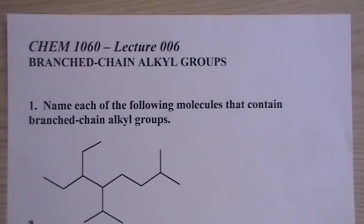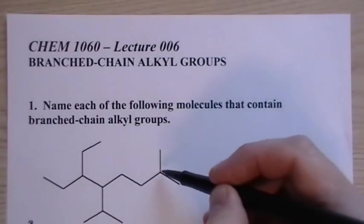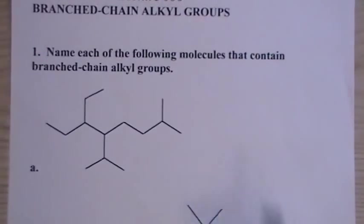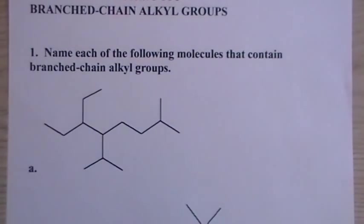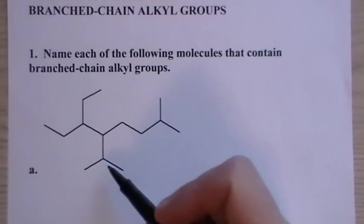Alright, so branched-chain alkyl groups, lecture six. We're used to after the last lecture having the parent chain and then a simple substituent like ethyl or methyl. But sometimes we get substituents that branch off from the parent chain and continue to branch off. The IUPAC system has a naming procedure for that, but it gets fairly complex. Since some of these branching substituents are so common, we like to use their common names.